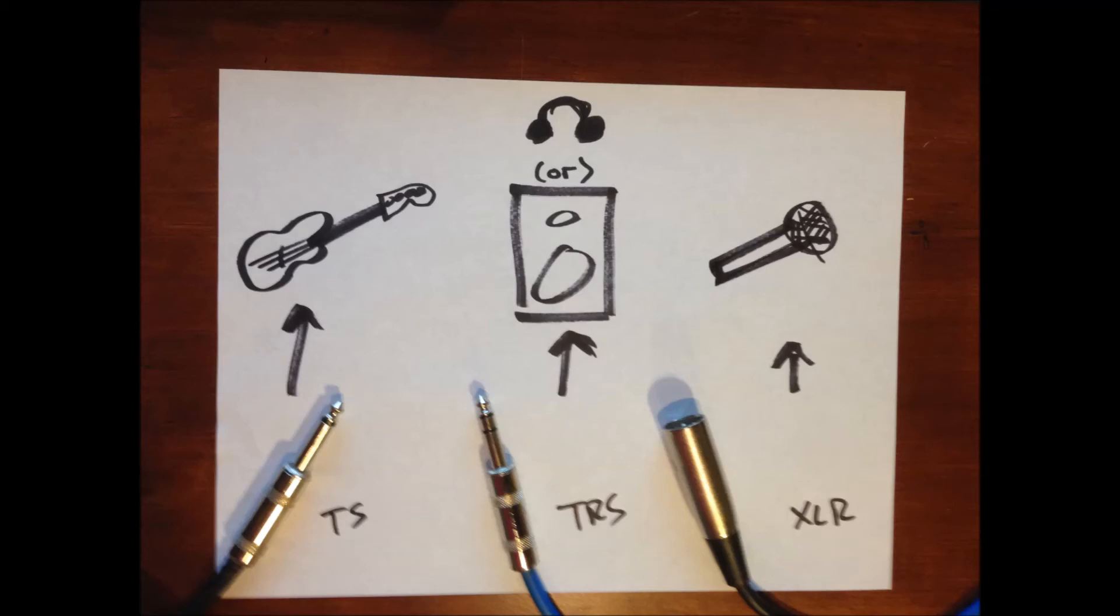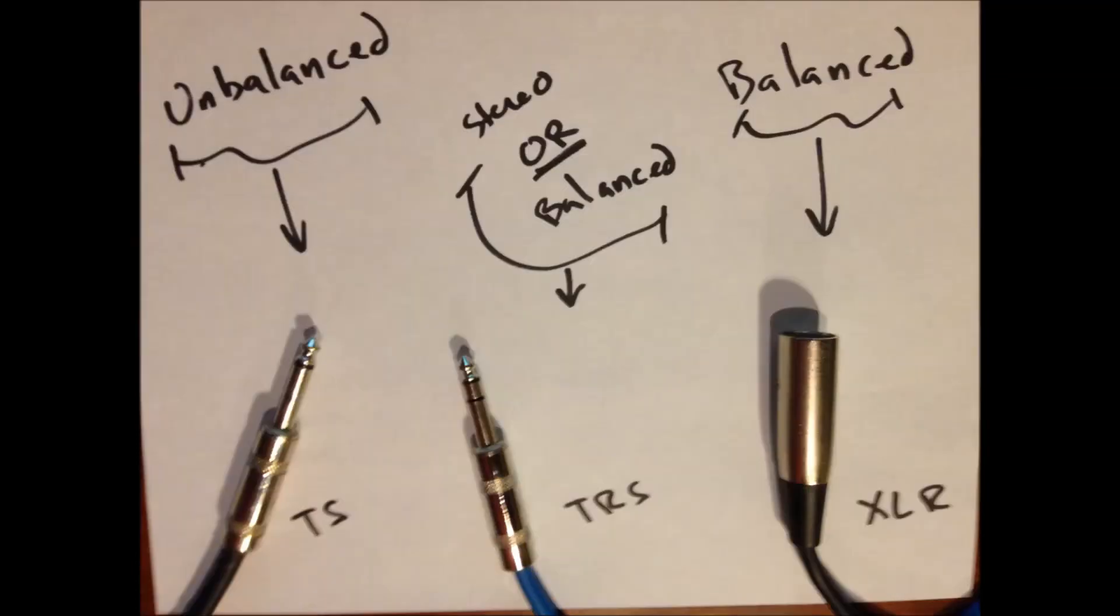So to wrap up this quick and dirty summary of unbalanced and balanced cables, TS cables are usually used for instrumentation and they can actually gather noise in a run that's more than 15 or 20 feet. An XLR cable can be run up to 100 feet or so or more without gathering extra noise. They're usually used for line-level signals or directly from microphones. And TRS kind of do this double duty. They can either be a stereo signal that's unbalanced and would gather noise after a certain length, or they can be used as a balanced mono signal, and often times they're used in studio monitors is the best example.